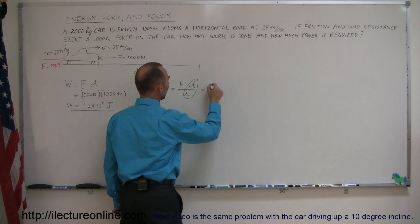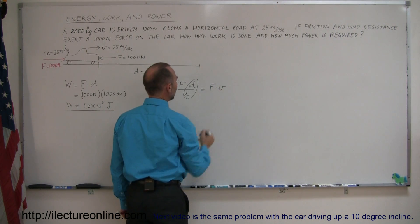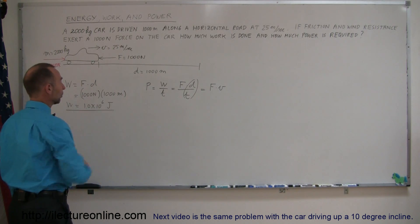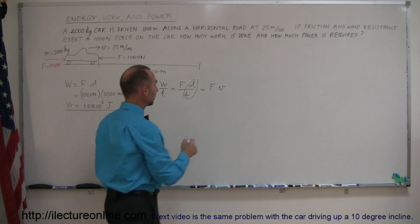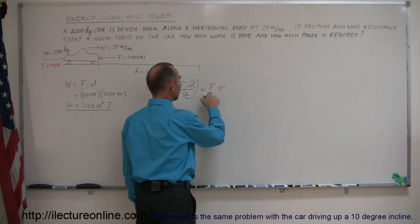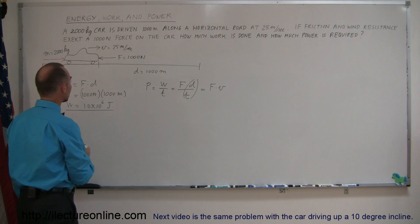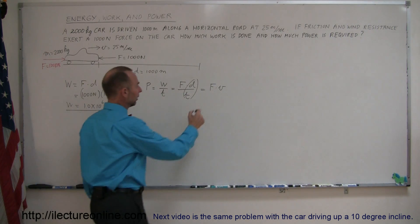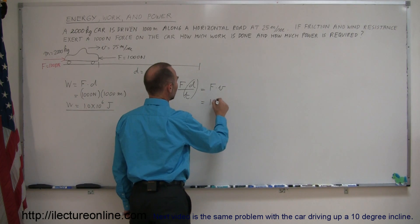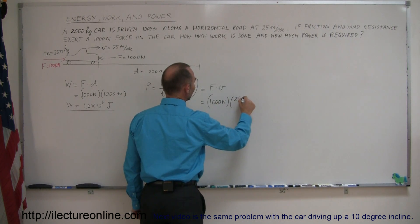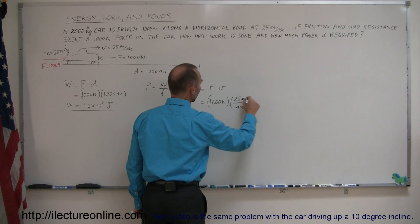So, this is equal to force times velocity. So, to find the power the car requires to overcome the wind resistance and the friction at 25 meters per second, we simply have to multiply the force the engine applies or the force the engine applies to the car times the velocity of the car. So, this is equal to 1,000 newtons times the velocity of 25 meters per second.